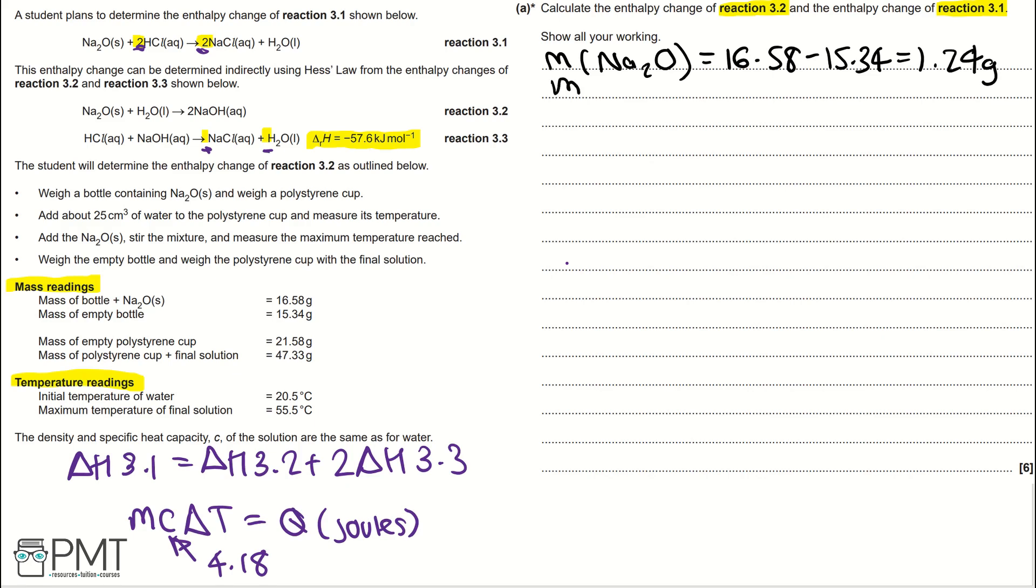Then, working out the mass of solution, we would take our 47.33 grams and minus it from our 21.58 to give us 25.75 grams.